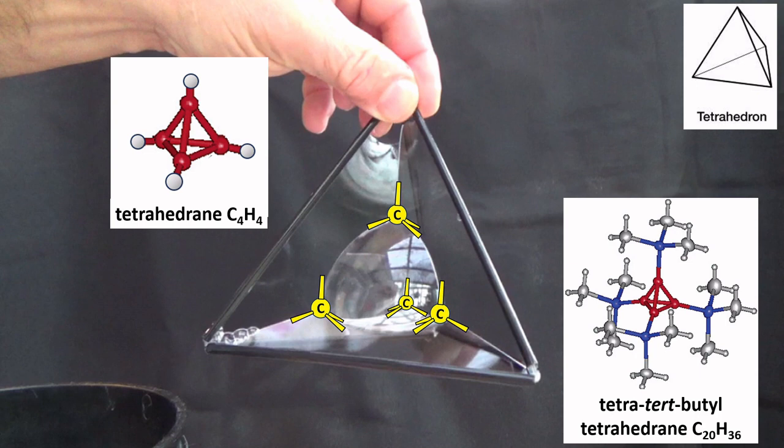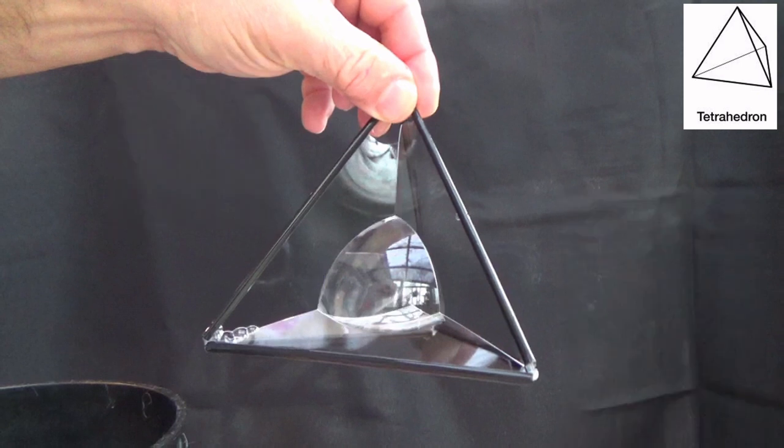There are derivatives of it. For instance, if you put a t-butyl group on each of those places instead of the hydrogens and get tertiary butyl tetrahedrane, C20H36, that is a molecule that's been synthesized. So that arrangement of carbon atoms is possible.